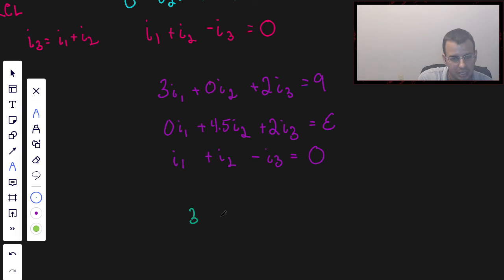And so at this point I'm actually going to put it in a matrix. So it's going to be 3, 0, 2, 9. So this is going to be an extended matrix, augmented matrix. 0, so you basically pretend there's a little equal sign right there. 0, 4.5, 2, epsilon. 1, 1, negative 1, 0.